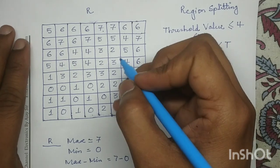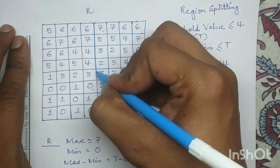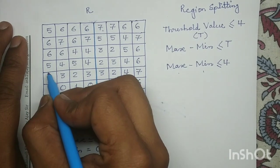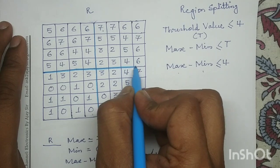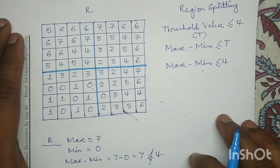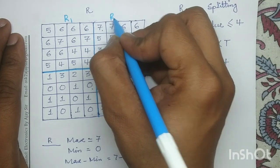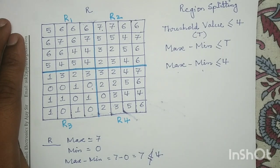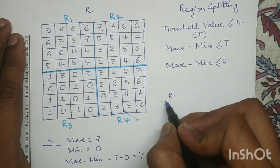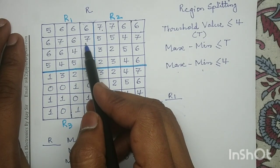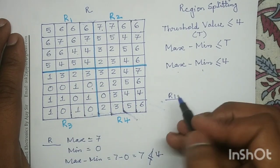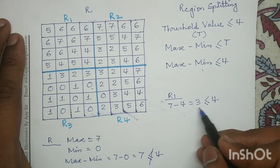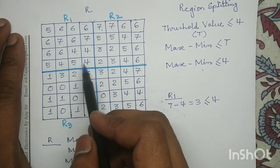We split region R into 4 quadrants and give naming to each region: R1, R2, R3, and R4. Now we check for region R1. For region R1, the maximum value is 7 and the minimum value is 4. So 7 minus 4 equals 3. It satisfies the homogeneity condition — 3 is less than or equal to 4. So we will not split region R1.